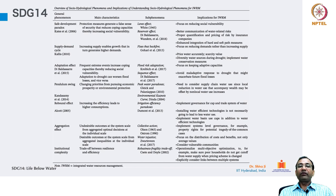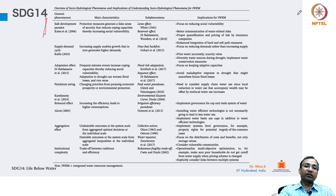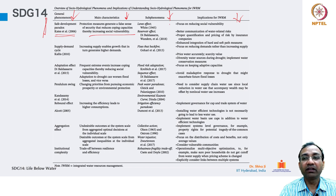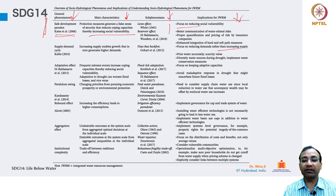Overview of socio-hydrological phenomena and implications for understanding IWRM. Through this you can understand: this column represents general phenomena, main characteristics of those sub-phenomena and implications for IWRM. Safe-sustainable paradox: main characteristic — protection measures generate a false sense of security that reduces coping capabilities, thereby increasing social vulnerability. Implications include focus on reducing social vulnerability, better communication of water-related risk, proper quantification, enhanced integration of hard and soft path measures, and focus on reducing demand rather than increasing supply.